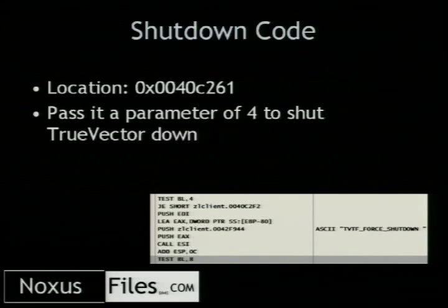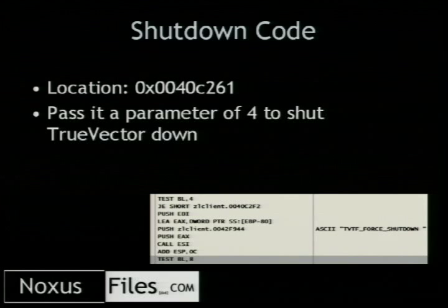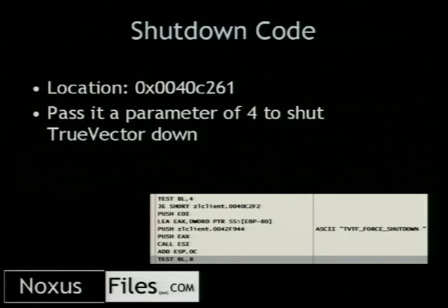Now we have to find a way to shut it off. This takes some reverse engineering. After a while of grinding through code, you find a little function at a particular hex location — and it's a pretty reliable address that doesn't change much. The funny part is, if you can see TVTF force shutdown right there — basically, if you pass it a value of four, it will tell True Vector to screw off and not do anything. We can call that the code that we inject into the firewall. If you try calling lower-level methods in the ZoneAlarm DLLs, it won't work — it has some sort of authentication that knows whether you're running it from the firewall or not.